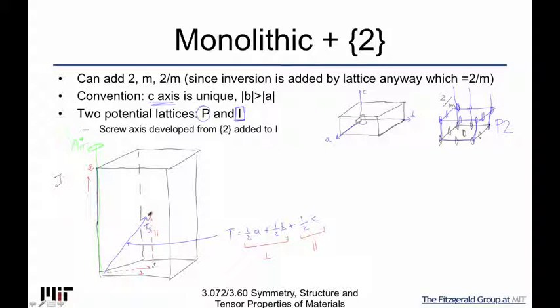Remember, we have A_pi and we have a translation vector, so we might expect some sort of possible other B_pi rotation. The combination theorem from before is: if I had an A_pi rotation and a translation, that induced another equivalent rotation at one-half T perpendicular. It's a little more complicated in 3D, and we want to look at that particular case.